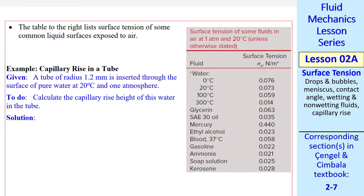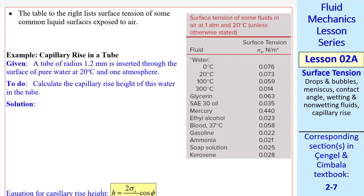We have a table that shows surface tension of some fluids in air at 1 atm and 20 degrees C. Compare, for example, water at 20 degrees C and a soap solution at 20 degrees C. The surface tension of soapy water is about a third that of water. That's part of the reason why you can wash things better with soap.